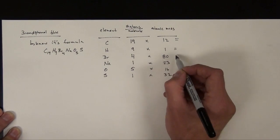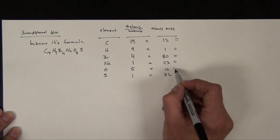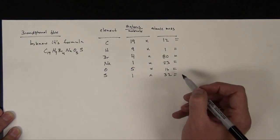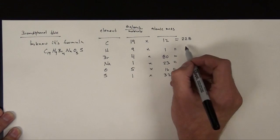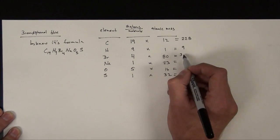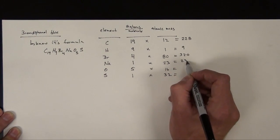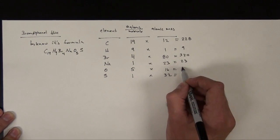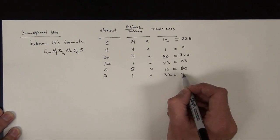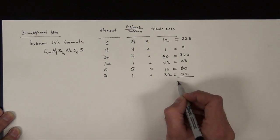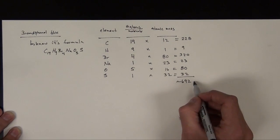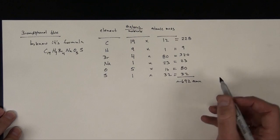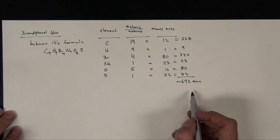So if I do our math, I'm going to get the sums of these. This will be 228 atomic mass units, 9, 320, 23, 80, and 32. So it's approximately 692. So what this is, this is how big the molecule is. It's 692 atomic mass units.